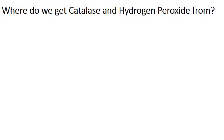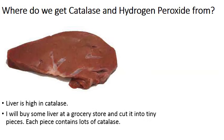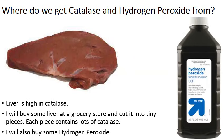Where do we get catalase and hydrogen peroxide to work with in this lab activity? Liver from the grocery store is high in catalase. I'll buy a pound of liver, cut it into tiny pieces that fit into test tubes, and each piece will contain a lot of the enzyme catalase. Hydrogen peroxide you can buy at CVS, Rite Aid, Walgreens, or any similar store.